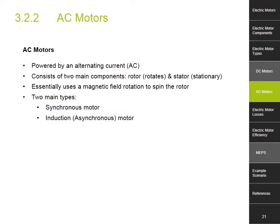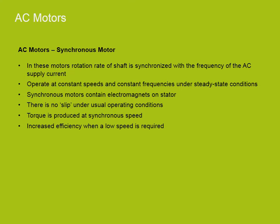An AC motor is an electric motor driven by an alternating current. It commonly consists of two basic parts: an outside stationary stator having coils supplied with alternating current to produce a rotating magnetic field, and an inside rotor attached to the output shaft that is given a torque by the rotating field. There are two main types of AC motors commonly used in industry: induction motors and synchronous motors. A synchronous electric motor is an AC motor in which the rotation rate of the shaft is synchronised with the frequency of the AC supply current. Synchronous motors operate at a constant speed and a constant frequency under a steady state condition. Synchronous motors contain electromagnets on the stator that create a magnetic field which rotates in time with the oscillations of the line current. The rotor turns in step with this field at the same rate. Another way of saying this is that the motor does not rely on slip under usual operating conditions, and as a result produces torque at synchronous speed.